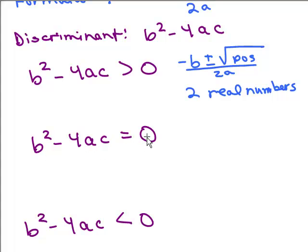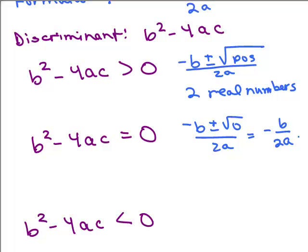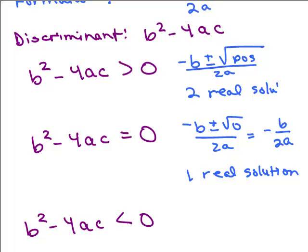What about if b squared minus 4ac equals 0? You'd have negative b plus or minus the square root of 0, over 2a. So you get negative b plus 0 and negative b minus 0 — that's the same thing — giving you just negative b over 2a. This happens when it was a perfect square and could have been factored, so you get one real solution.